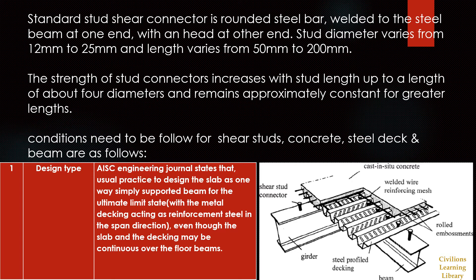There are several conditions that need to be followed for shear studs, concrete, and steel deck, which we will see one by one. The first condition is design type. Based on the AISC engineering journal, the usual practice is to design the slab as a one-way simply supported beam for the ultimate limit state condition, even though the slab and decking may be continuous over the floor beams. As shown in the sample image, the main girder and secondary joists are connected, with the deck seat placed over those steel beams.